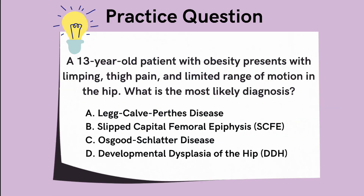Next, let's try a practice question. A 13-year-old patient with obesity presents with limping, thigh pain, and limited range of motion in the hip. What is the most likely diagnosis? Is it A) Legg-Calvé-Perthes disease, B) Slipped Capital Femoral Epiphysis or SCFE, C) Osgood-Schlatter disease, or D) Developmental Dysplasia of the Hip, or DDH?